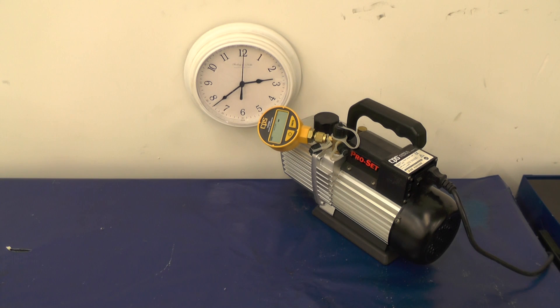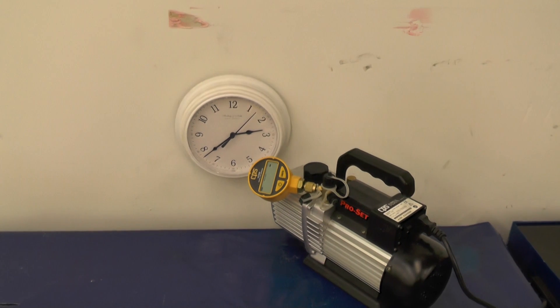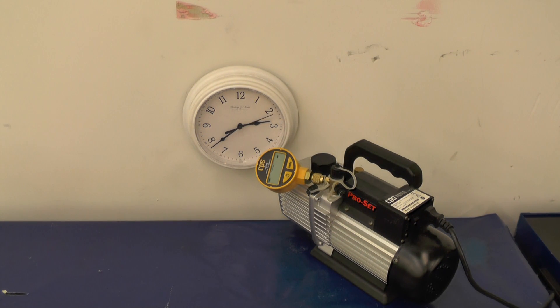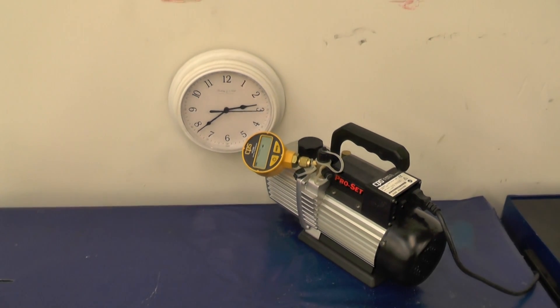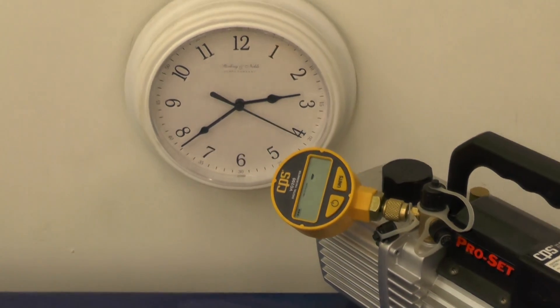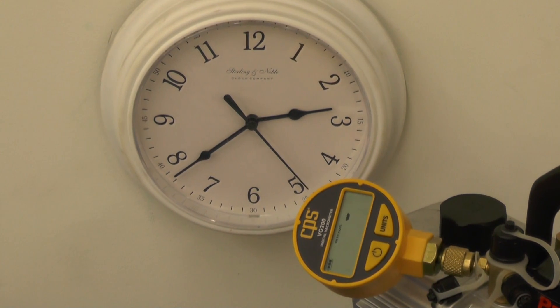We've all hooked up low side gauges to vacuum pumps before and ran them, and it's not uncommon to see the low side gauge drop down pretty close to 30 inches relatively quick. But I've done that here with this and I've compared it to the readings I get with just a micron gauge by itself. So that's why I wanted to run this test first just with the micron gauge directly connected to the vacuum pump by itself.